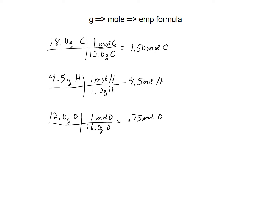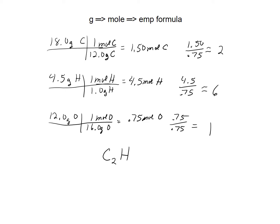The next step is to divide by the smallest number of moles. The smallest is 0.75. So: 1.50 divided by 0.75 equals 2, 4.5 divided by 0.75 equals 6, and 0.75 divided by 0.75 equals 1. The empirical formula is C2H6O.